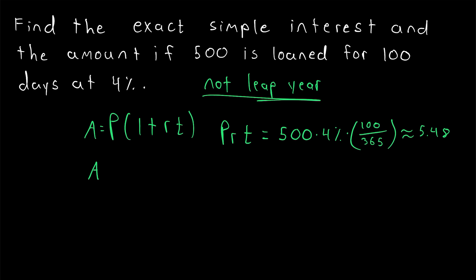Then we just need to calculate the amount, which is the sum of the principal plus the interest. The principal is 500, we just calculated the interest as about 5.48, and so the total amount is about 505.48. So, whoever borrowed the 500 for 100 days has to pay back 505.48.